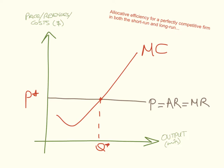A perfectly competitive firm will achieve allocative efficiency in both the long run and the short run. Because the firm is a price taker, it will always produce — if it wants to maximise its profit — at a level of output where marginal cost intersects marginal revenue, and marginal revenue also happens to equal average revenue. So the profit-maximising level of output and price is also the same point where the firm achieves allocative efficiency in both the short run and the long run.